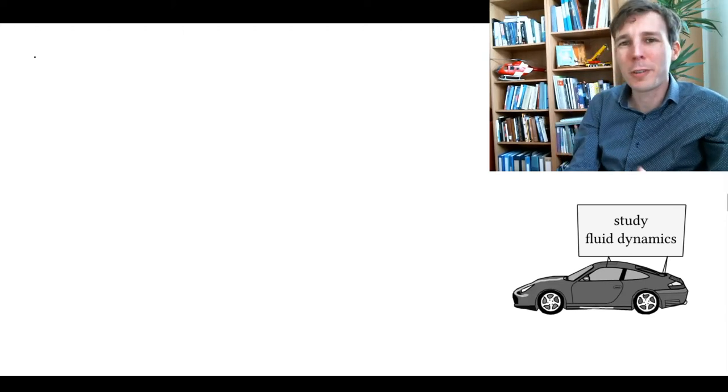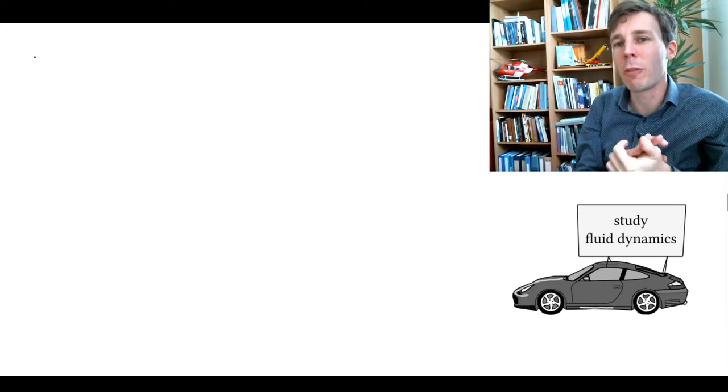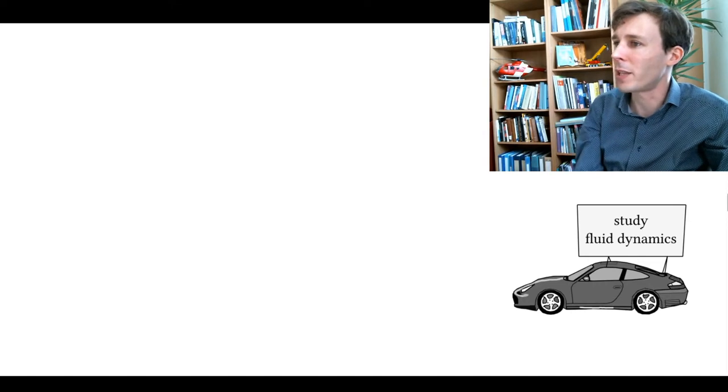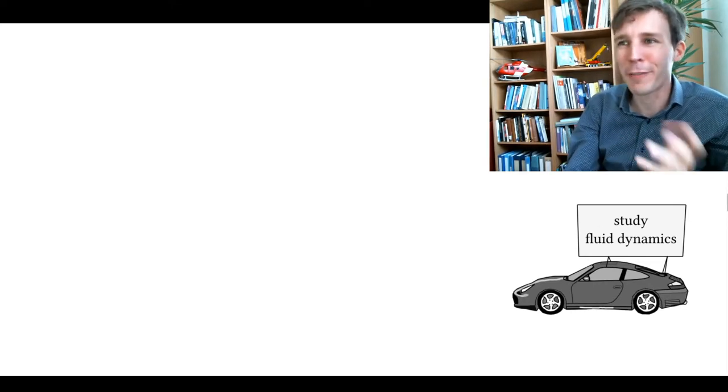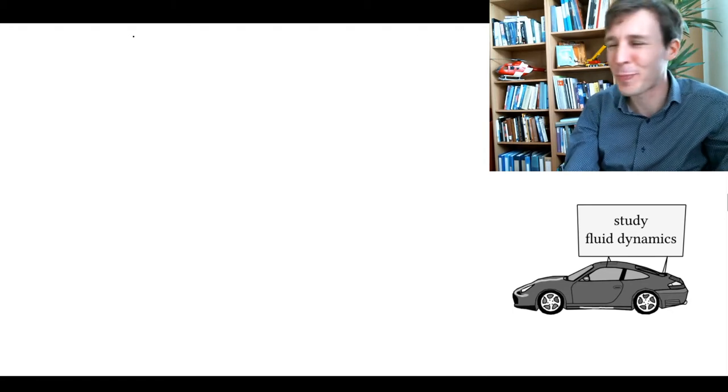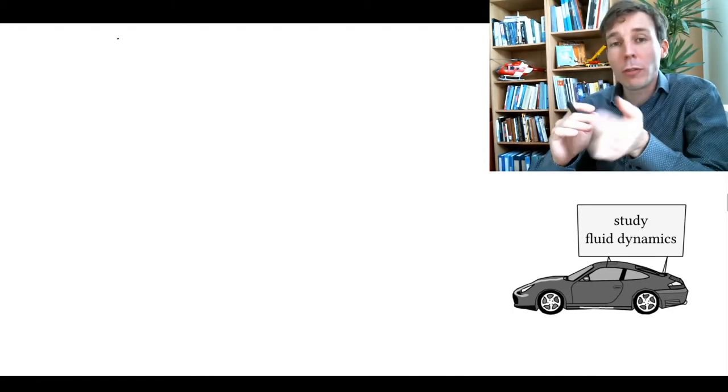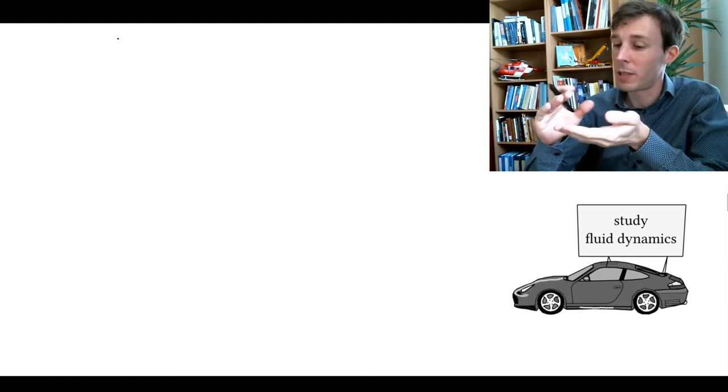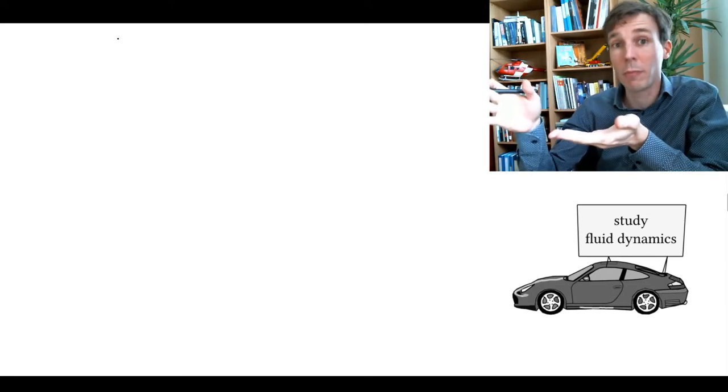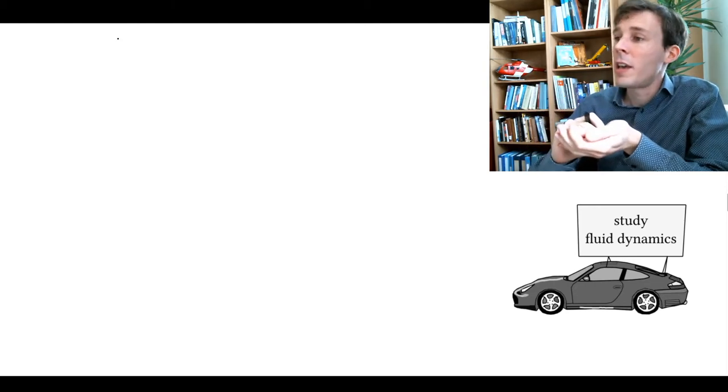In this problem, we are interested in the boundary layer that is developing above an advertising board that is placed above a car by a fluid dynamics teacher who wants to advertise for their fluid dynamics course. And what we'd like to quantify is two things. One is whether the boundary layer transits, which means whether it becomes turbulent, starting laminar, and if so, where.